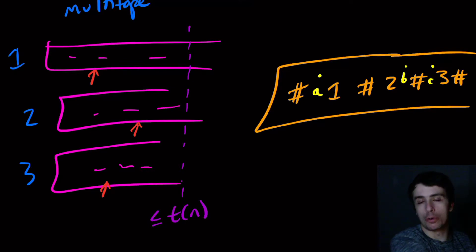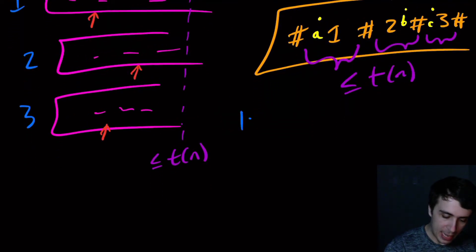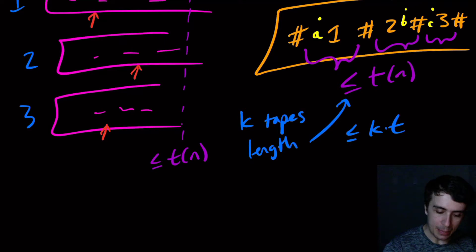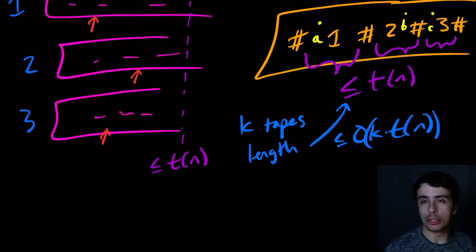Because if every time we move over, we just move right, then we're going to hit the T of nth cell, because that's how far we actually move. So that means that each of these segments right here is going to have length at most T of n each. So that means that if there are k tapes, then the length of this stuff over here is at most k times T of n. Maybe we can put a big O in front of that, because I'm not including the pound signs here, so there may be a constant change there. But it's like k times the maximum possible distance that any one of the tapes in the original multi-tape thing did.